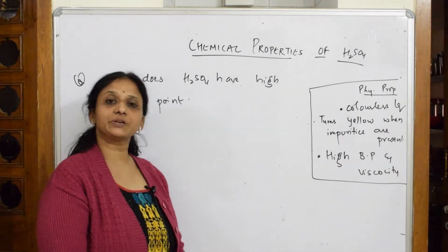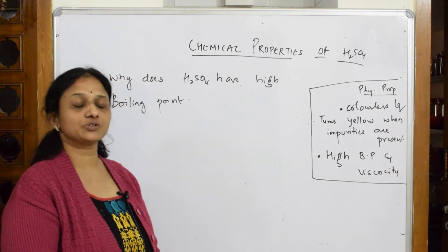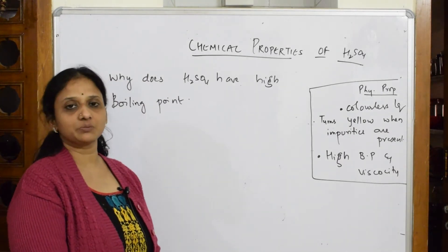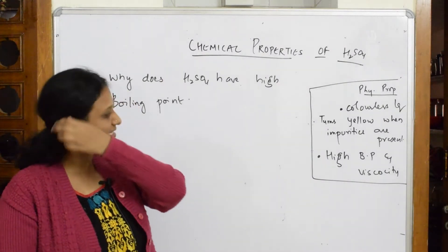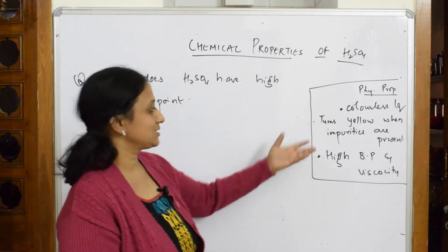Right, now we have already seen the preparation of sulfuric acid by contact process. Let's come back and start with the chemical properties. Before going to the chemical properties, let's see some physical properties. I think there's nothing to explain.